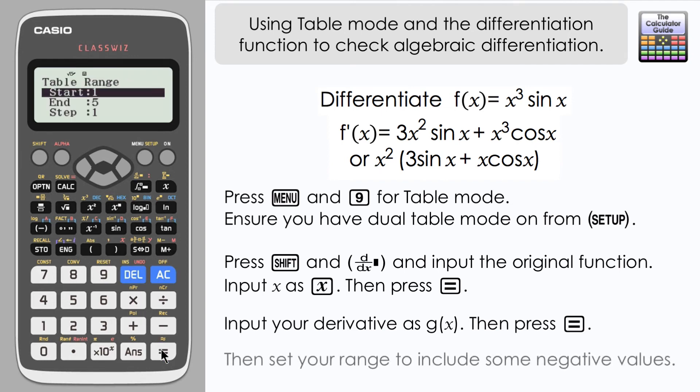Now we need to establish our range. Now it's up to you to choose what table range you want. I would suggest having some negative values and some positive values. So I'm just going to alter that one to -5 and press equals.